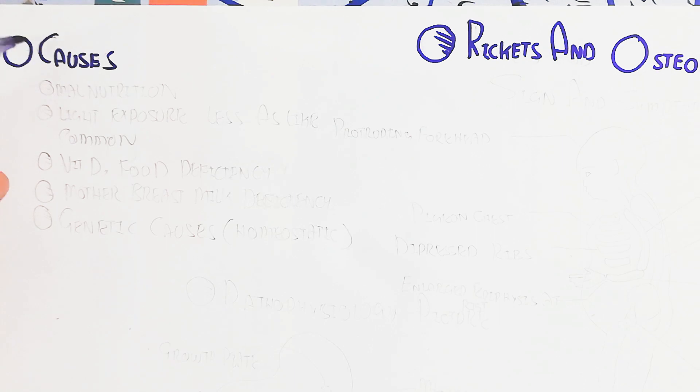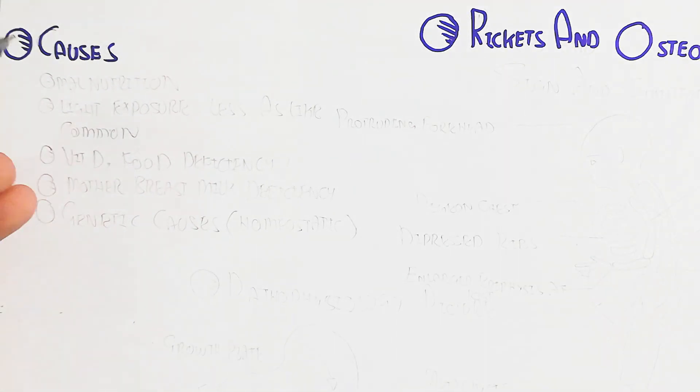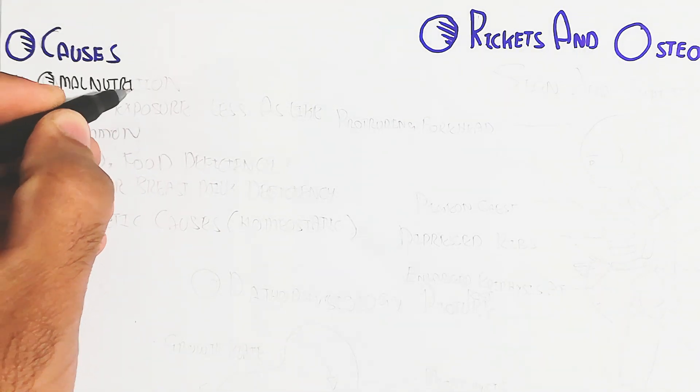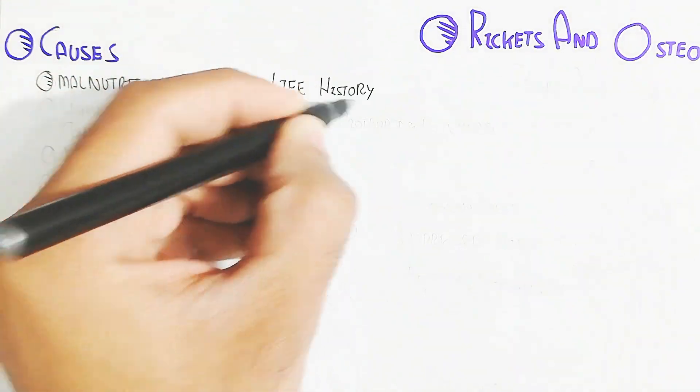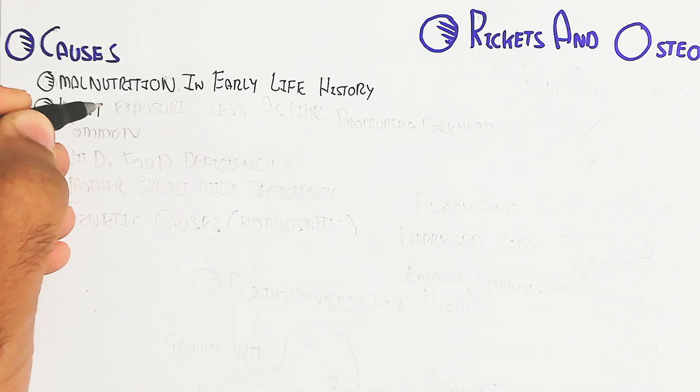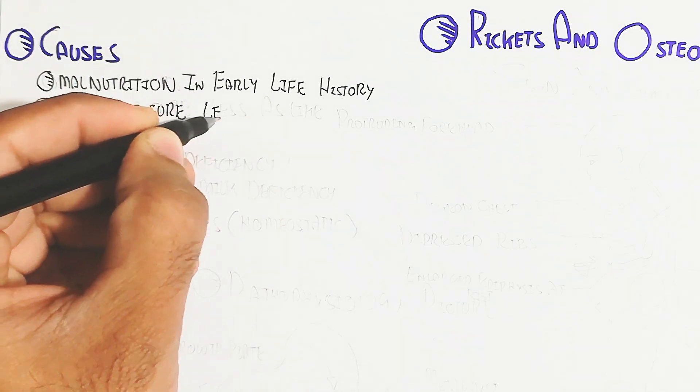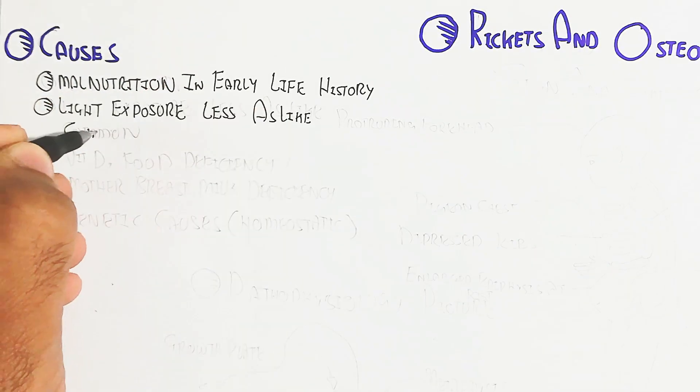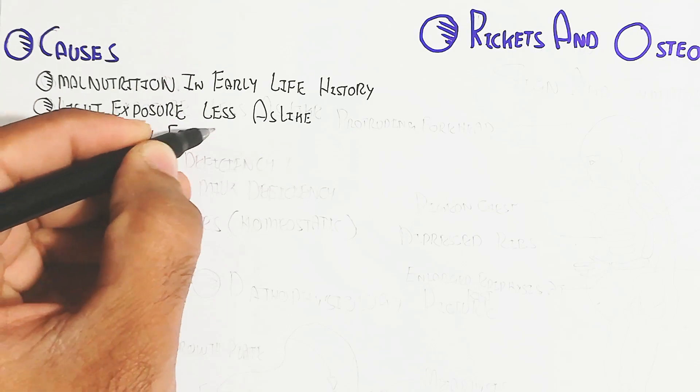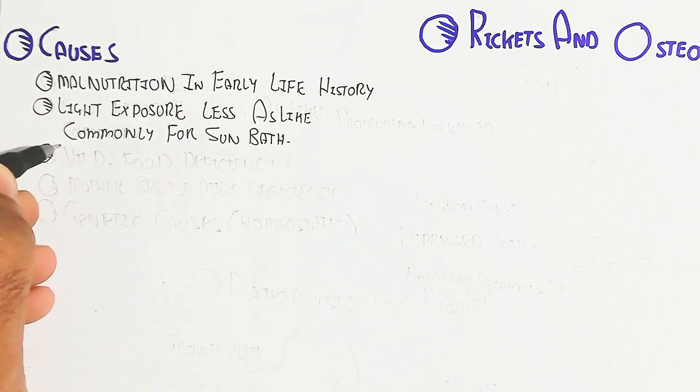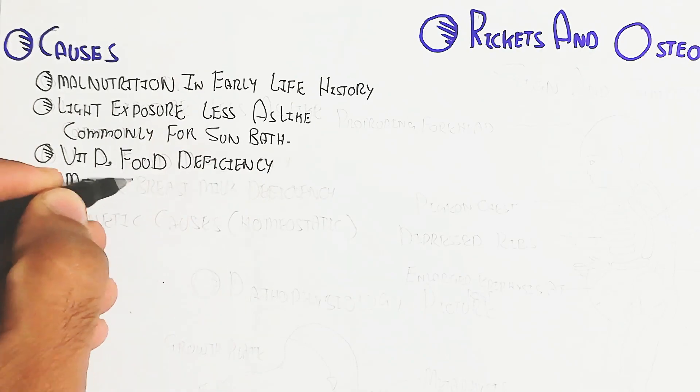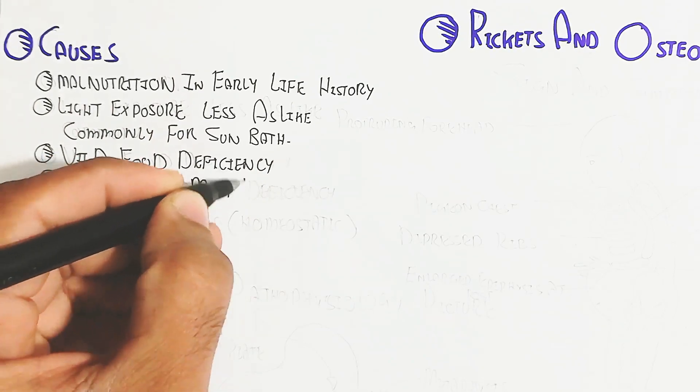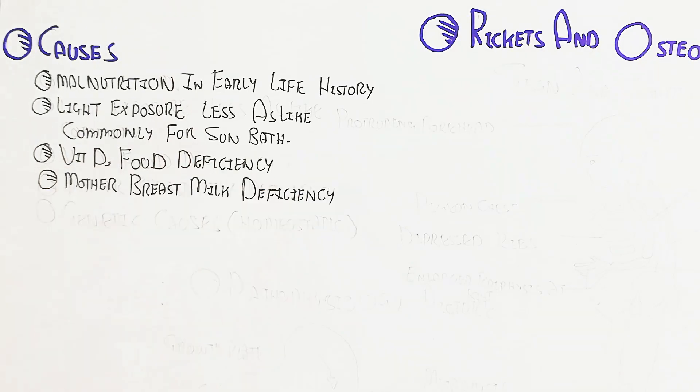The first cause is malnutrition in early life history. Light exposure less, commonly for sun bath, so when we do not expose in front of the light. On the other hand, vitamin D food deficiency, mother's breast milk deficiency during the early age for child lactation, and genetic causes like homeostatic disturbance.